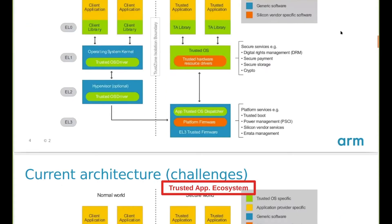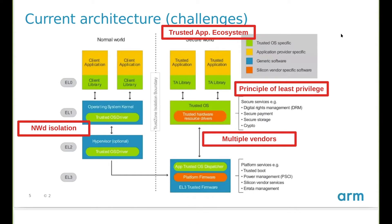The foundation spans multiple vendors. The trusted application ecosystem — as you see in the slide — shows trusted applications running at secure EL0, which are mainly trusted OS-specific and linked to a TA library. On the other side, in the normal world, the client application links to a client library, which is also tied to the trusted OS. This makes it difficult for trusted applications to be ported to other trusted OSes — so that's in a way an API and linkage problem.